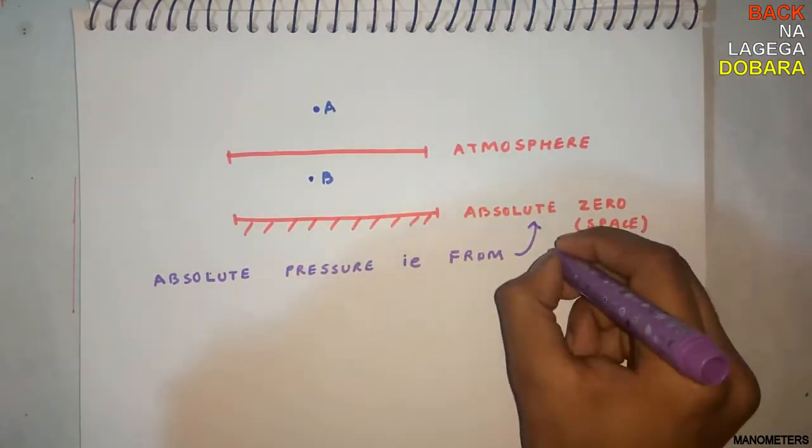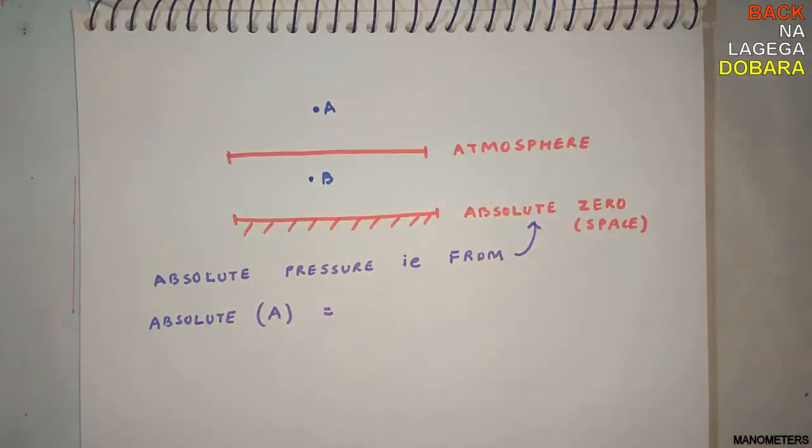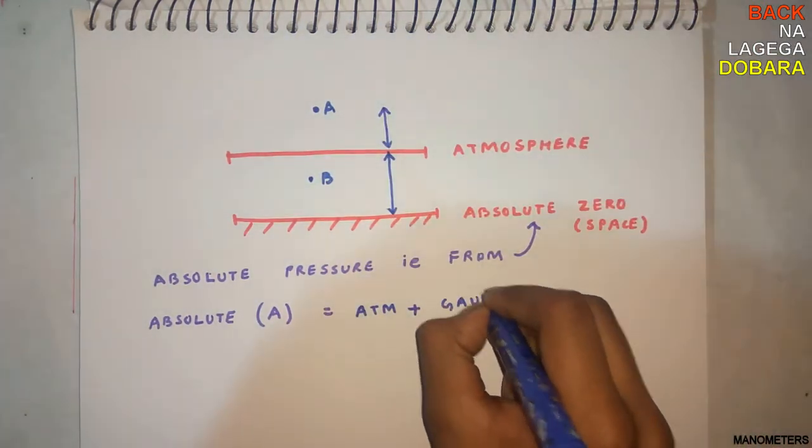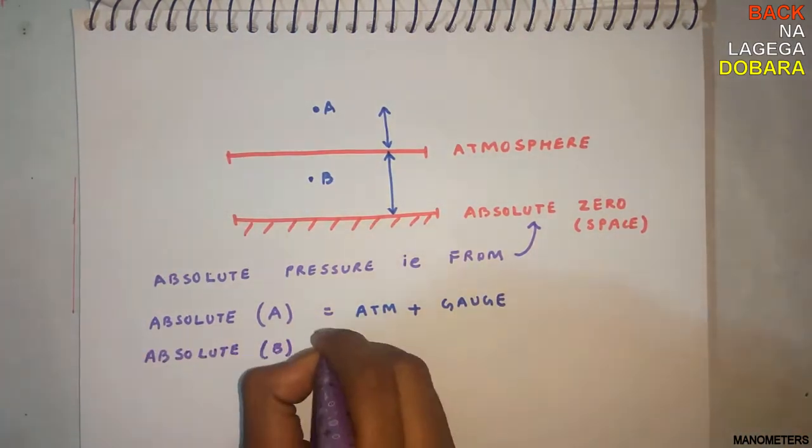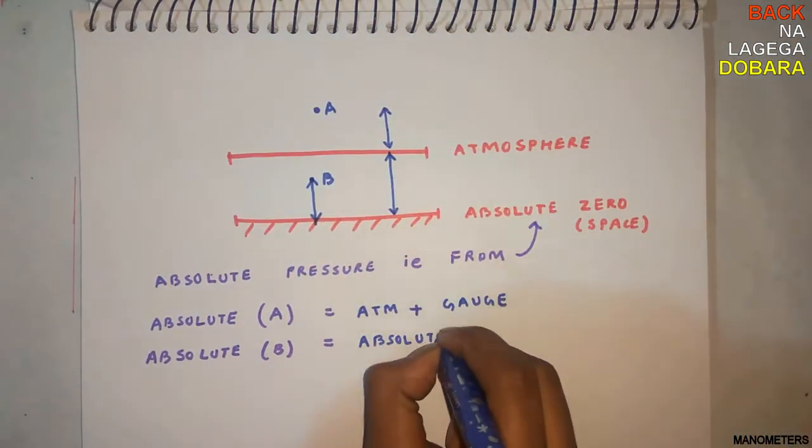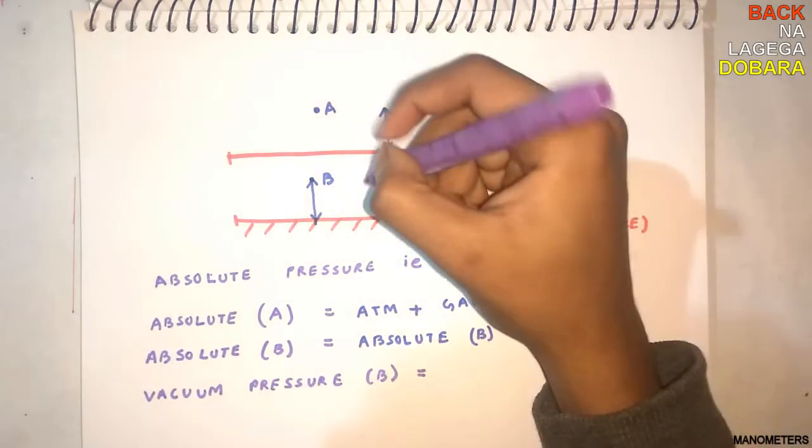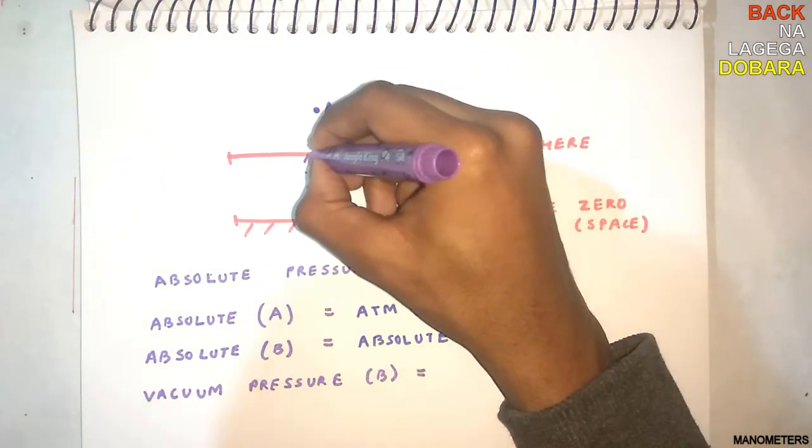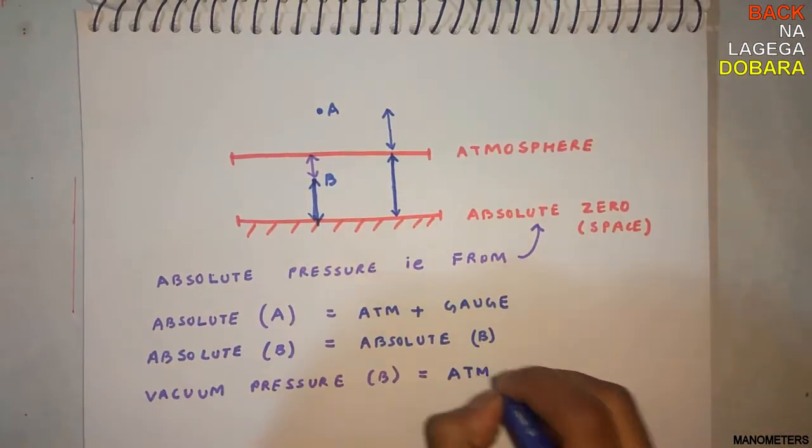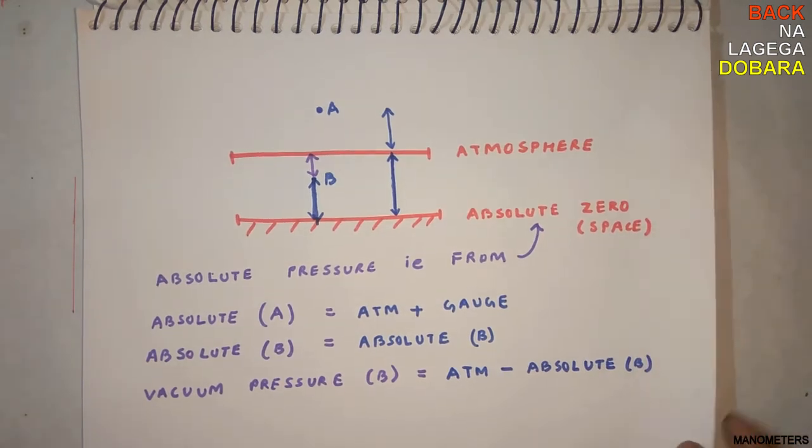How we represent absolute pressure at A: it will be atmospheric pressure plus gauge pressure. And what will be absolute pressure at B? It will be simply absolute pressure at B. There is no change. It's easy. For vacuum pressure at B, we need the negative side, means this region, that is atmospheric pressure minus the absolute pressure at B. Atmospheric minus absolute pressure, simple.